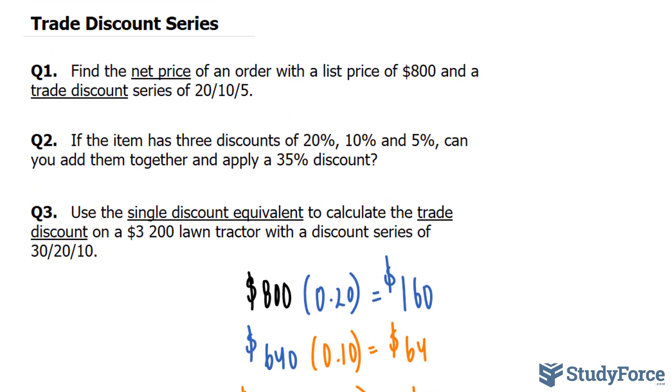The next question is interesting and you probably thought about it as I was doing question one. If the item has three discounts, let's say 20, 10 and 5, like in our previous example, can you add them together and apply a 35% discount? Well, let's find out.